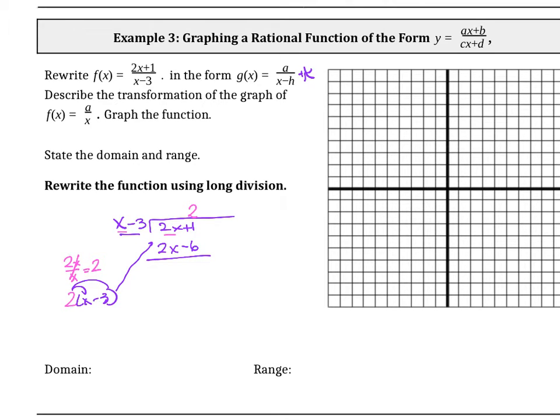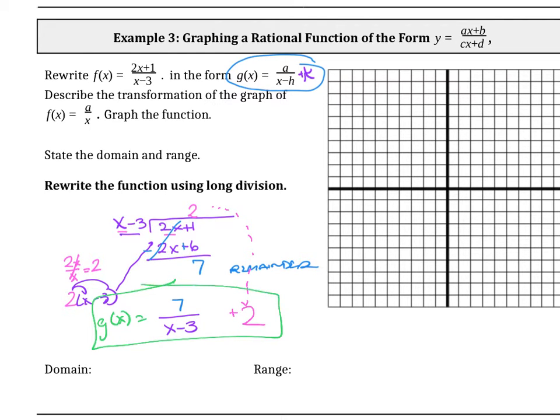The next step is to subtract. When we subtract, we change all the signs to opposite signs. So the first term disappears. Now we have 1 plus 6, and so that is 7. So remember that is our remainder. And because we want it of the form g(x) equals a over x minus h plus k, this is what we're going to do. Write 7 the remainder, that goes over the divisor x minus 3. So the remainder over the divisor, and then we're going to add this answer on top. So plus 2. And so now, here is our function that we want, g(x) equals this function here.